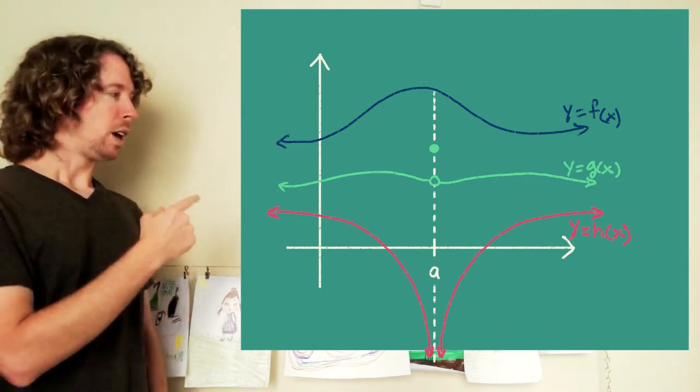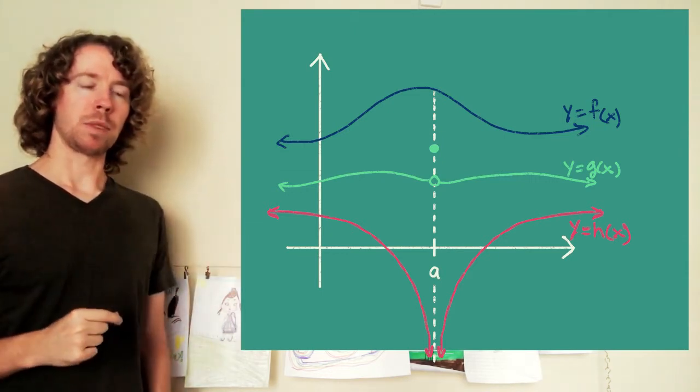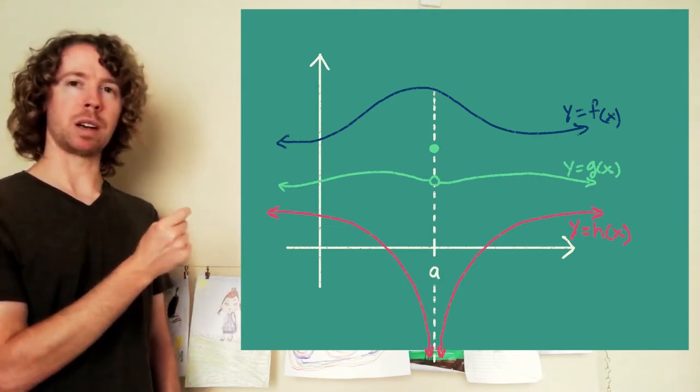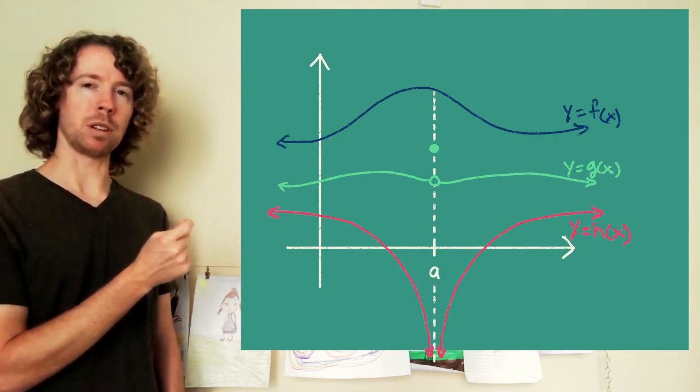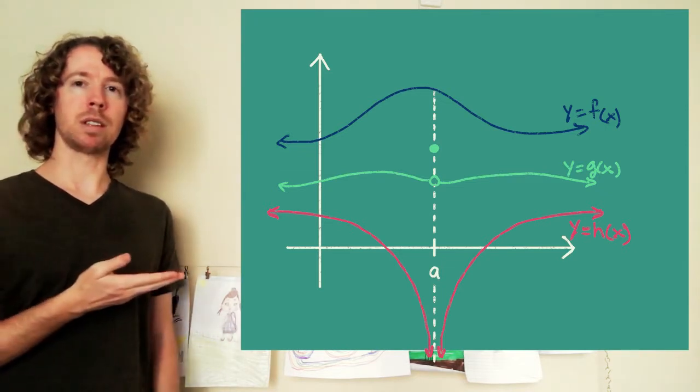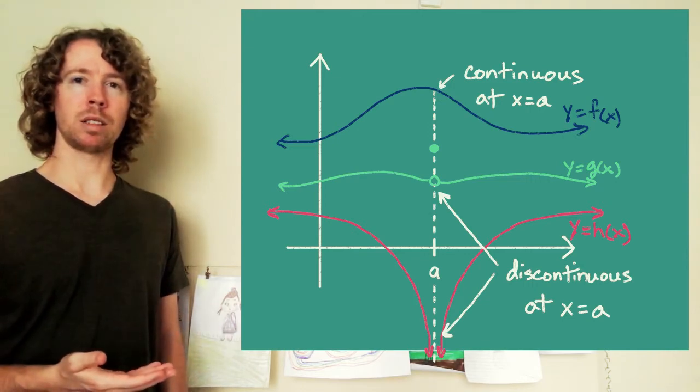And the idea is, if you take your pencil or your pen and you're tracing over that graph, if your graph is continuous at x equals a, then you won't have to pick up your pencil or your pen at that point. It's pretty obvious from these three graphs that the top one is continuous, and the bottom two are not continuous, they're discontinuous at x equals a.